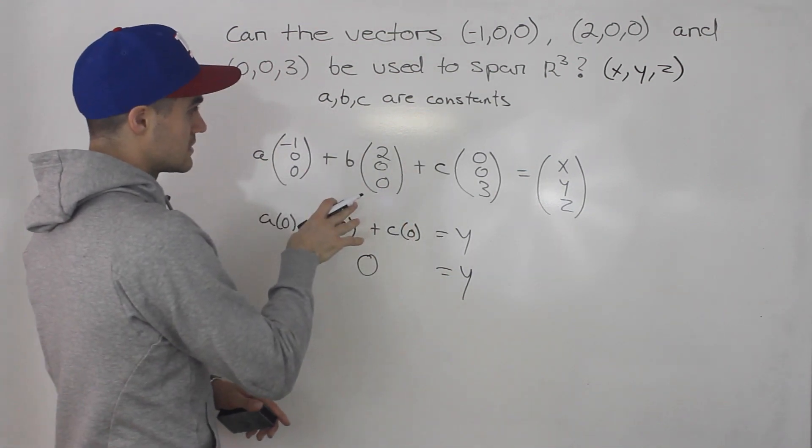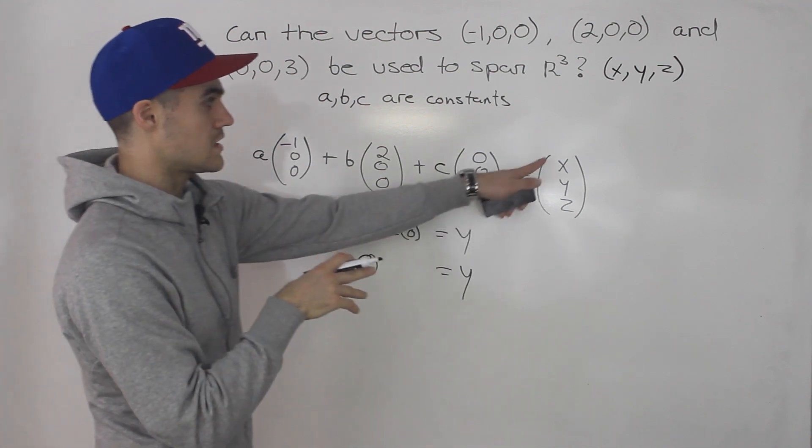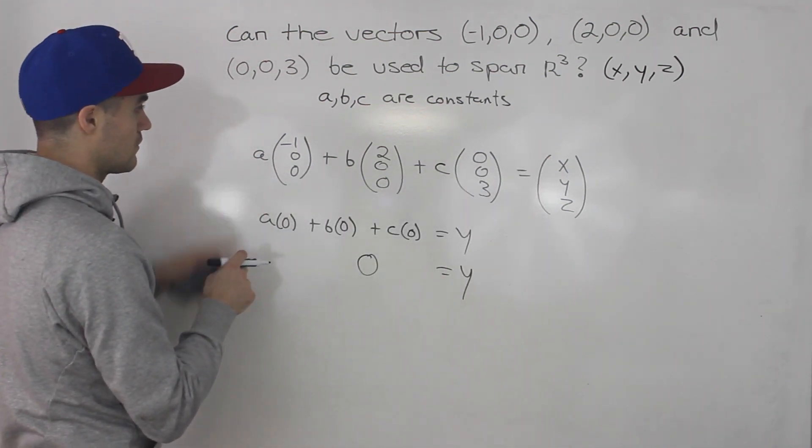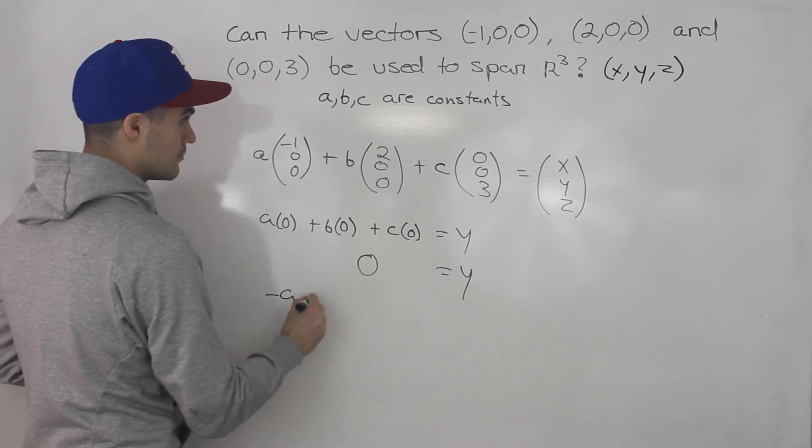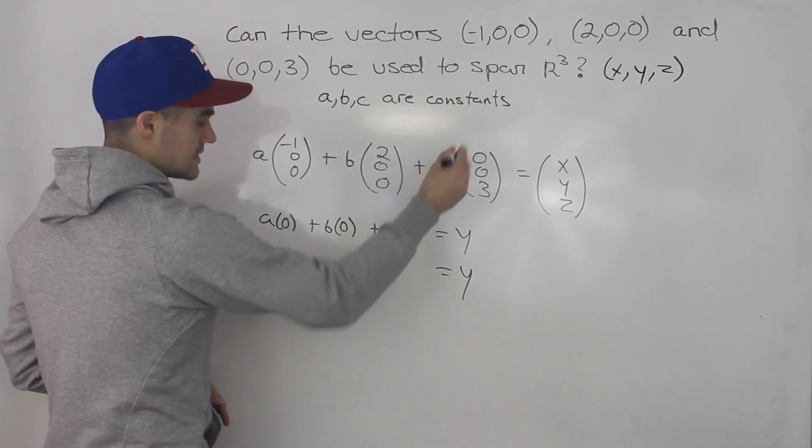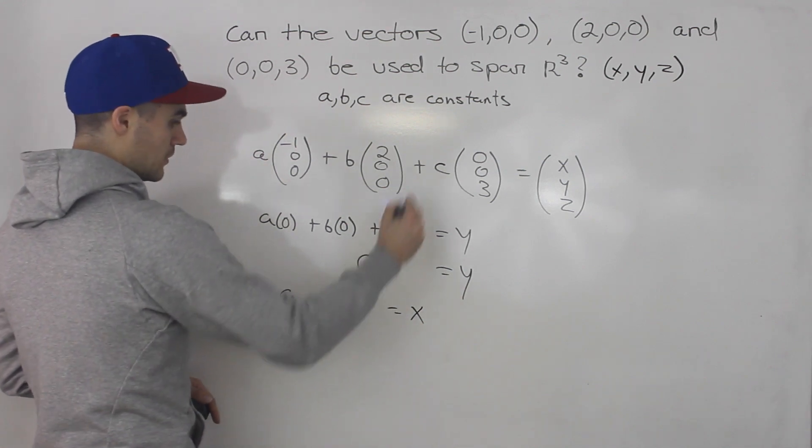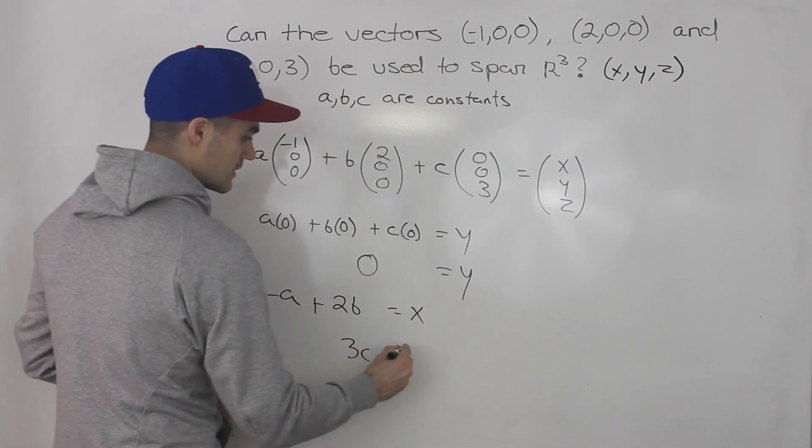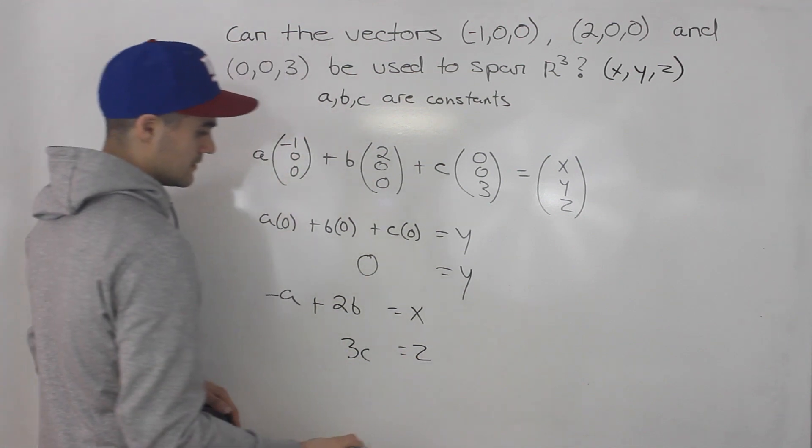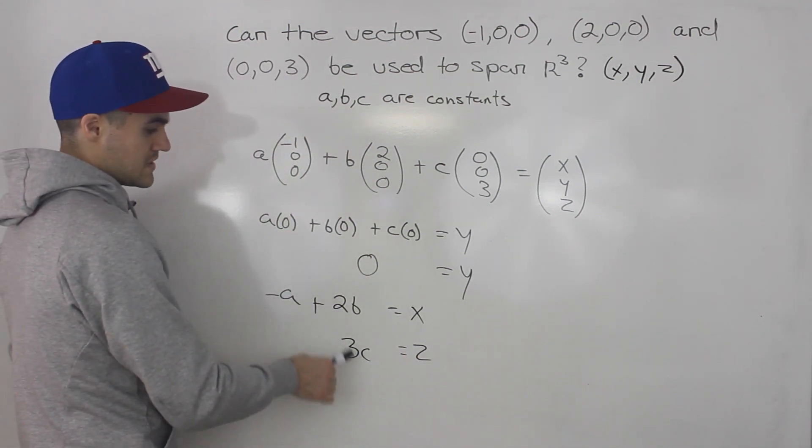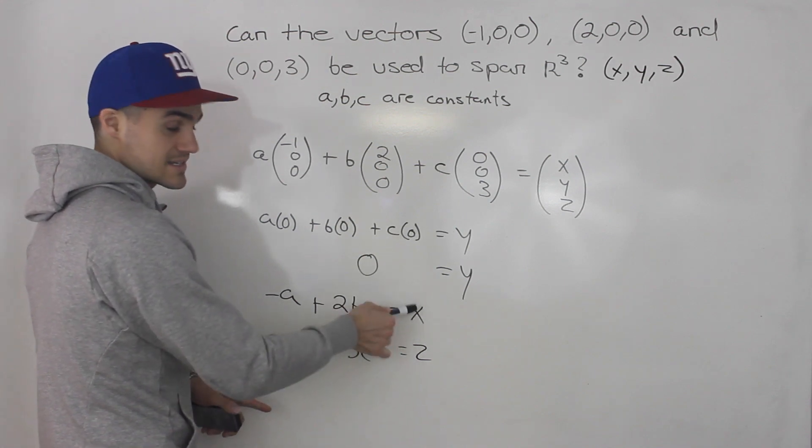The rest of the coordinates we can work with, because for the other equations we'll have -a + 2b (c times zero is just zero) will equal x. And then we'll have 3c is equal to z. Right? So we can work with certain a, b, c values to give us any x, z coordinate.